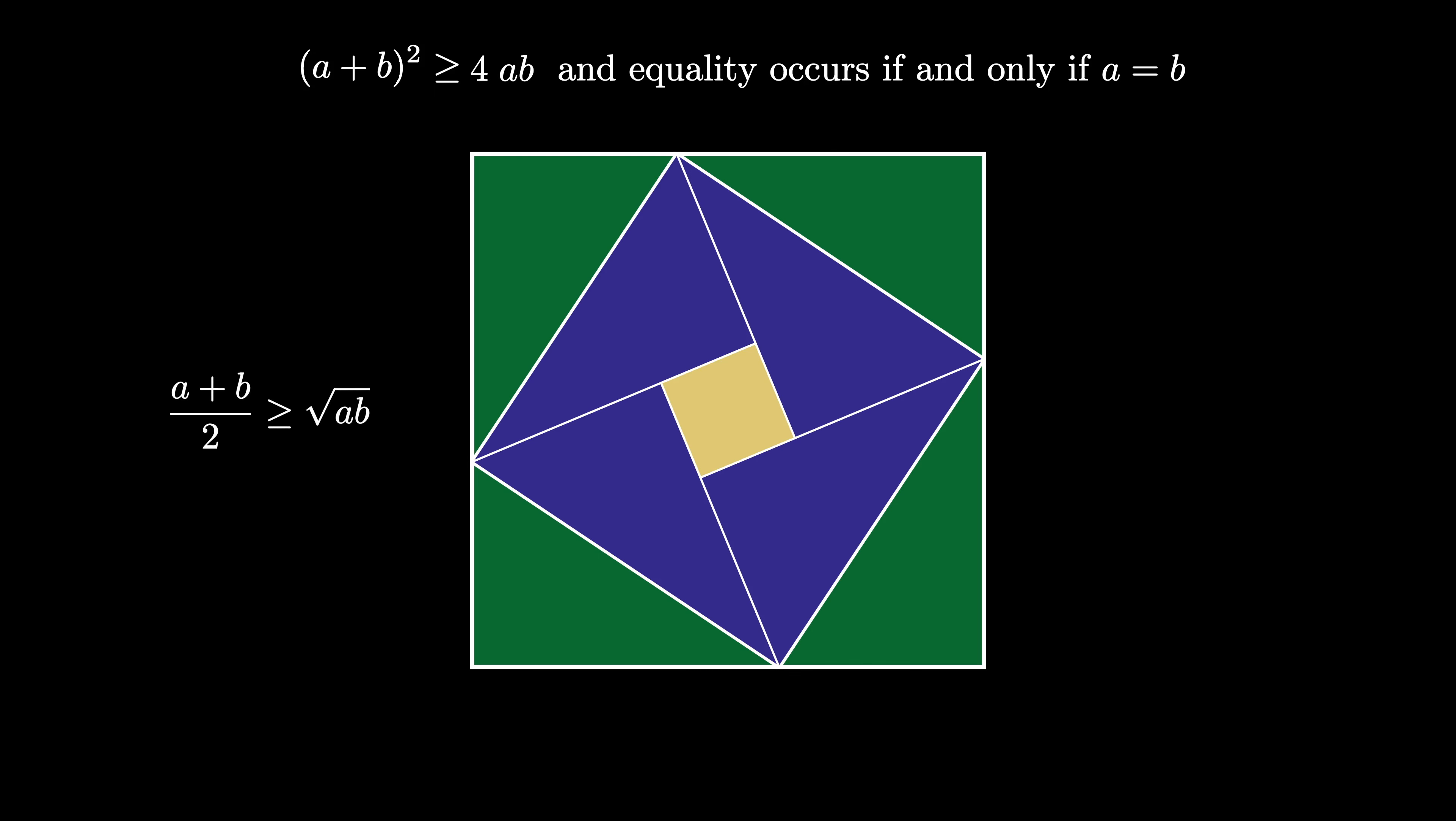Upon taking square roots and dividing both sides by 2, we obtain the inequality a plus b over 2 is greater than or equal to the square root of a times b. This is the arithmetic mean, geometric mean inequality.